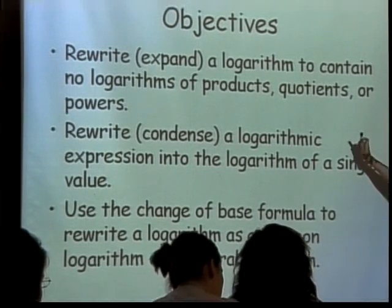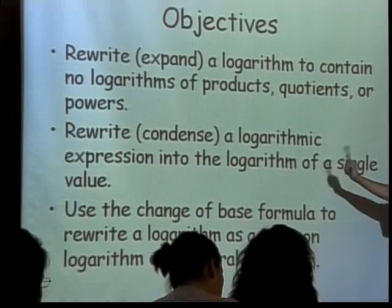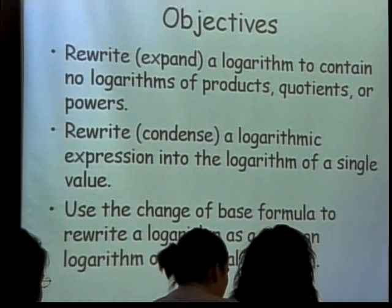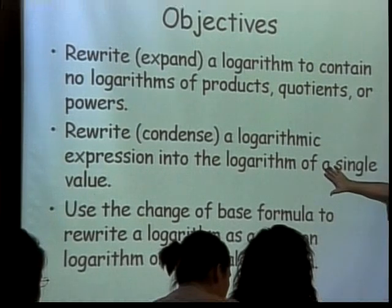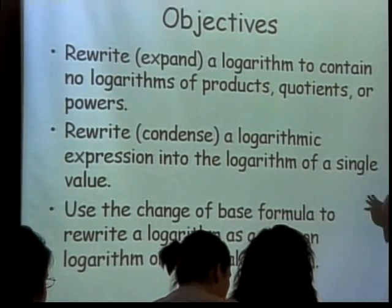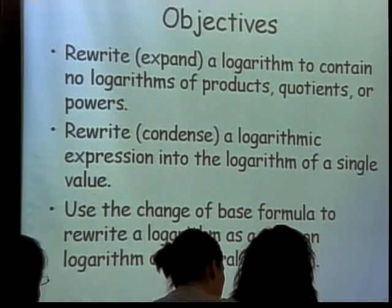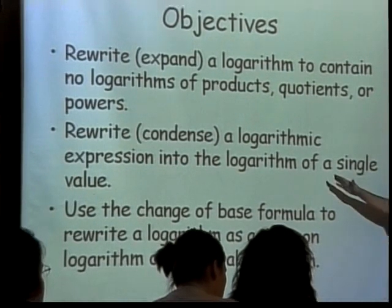And condensing is to rewrite a logarithmic expression into a logarithm of a single value. In other words, if you've got two logarithms, you can squish them together and make them as one. That becomes very handy when we solve logarithmic equations. Having a single logarithm equals something is much better than having this logarithm plus that logarithm equals something.